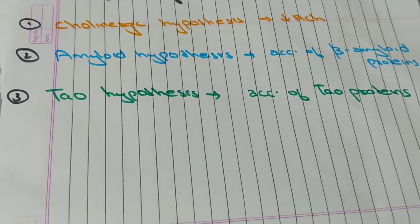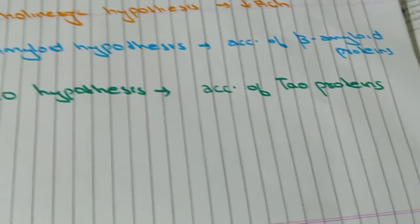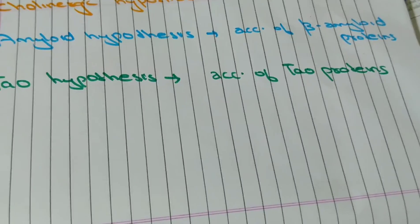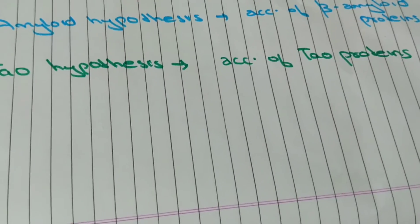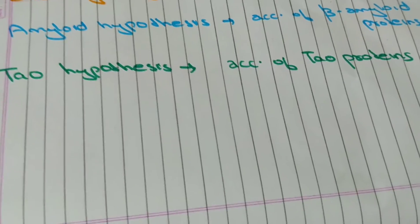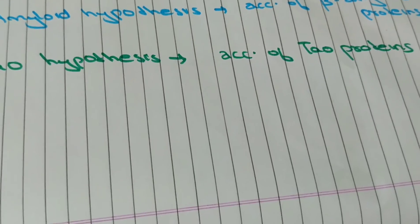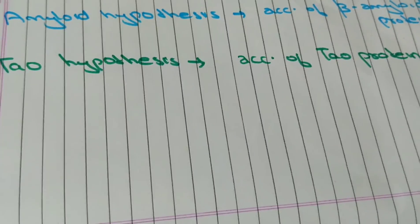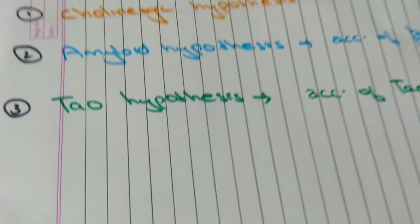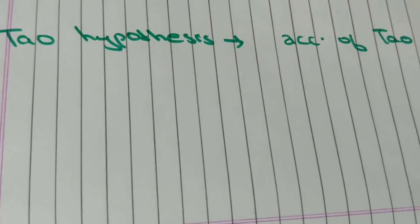The third one is tau hypothesis which is due to accumulation of tau proteins. Tau proteins cause tangles between nerve cells in brains. These tau proteins actually help to lengthen and support microtubule functions normally. Microtubules are very essential for the transport of nutrients and information throughout the neuron. When tau proteins tangle in our brain it causes Alzheimer's disease.